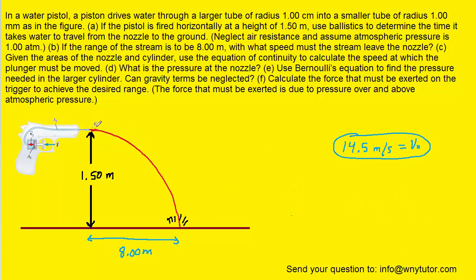Going back to the diagram, the velocity marked V2 is the velocity we just determined: 14.5 meters per second. Part C asks us to use the areas of the nozzle and cylinder along with the equation of continuity to calculate the speed at which the plunger must be moved. That plunger speed is denoted as V1 in the picture.